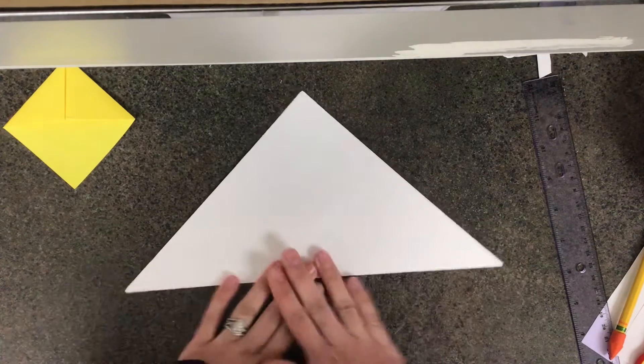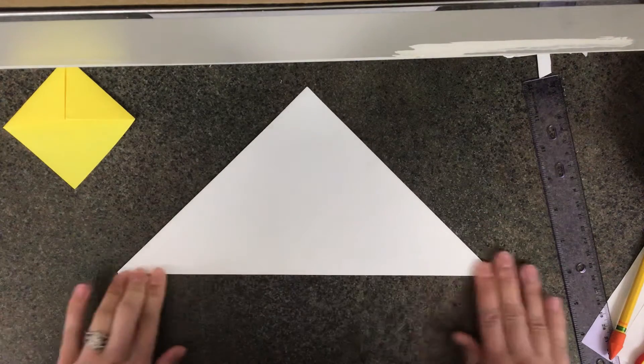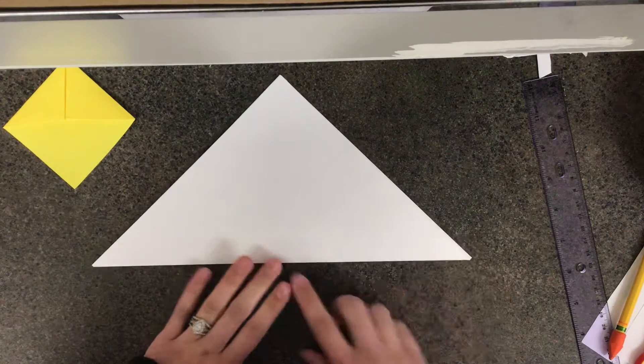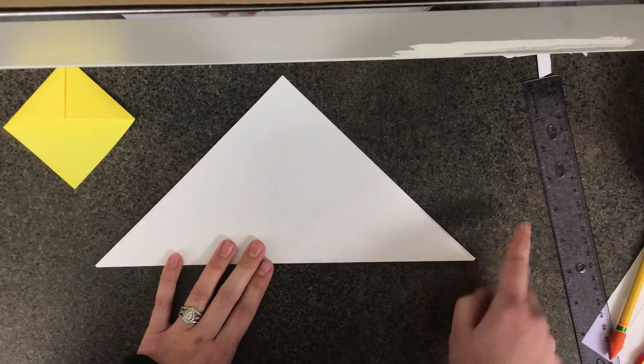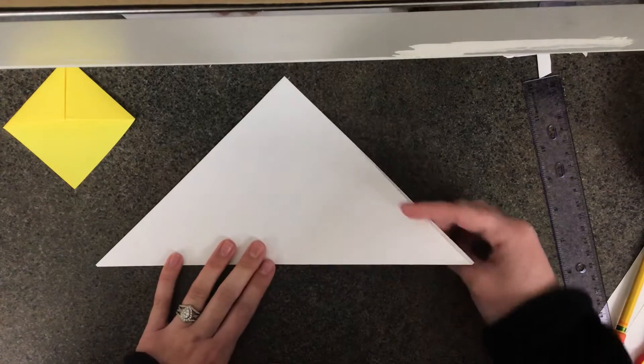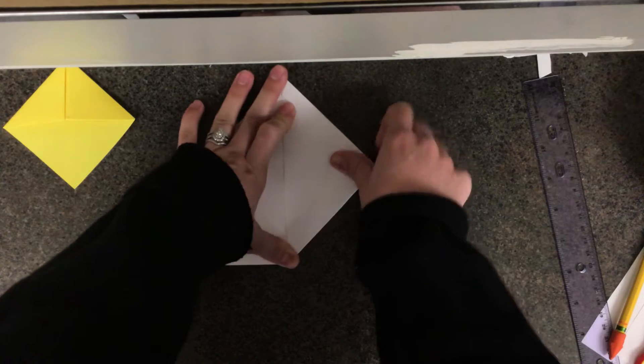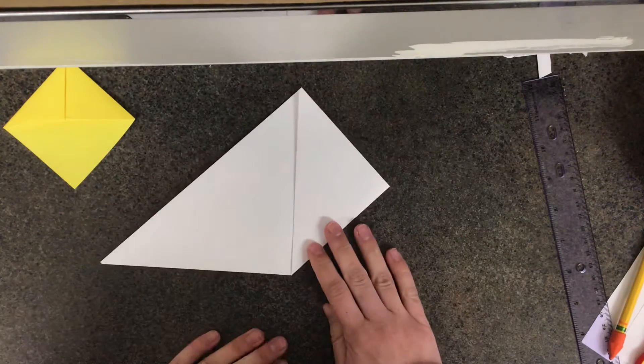After we folded our paper in half like this, it should look like a triangle. The next thing we're going to do is take the right corner and fold it up to the top corner. We are going to do the same thing on the left corner. Take this, fold it up to the top, and crease it.